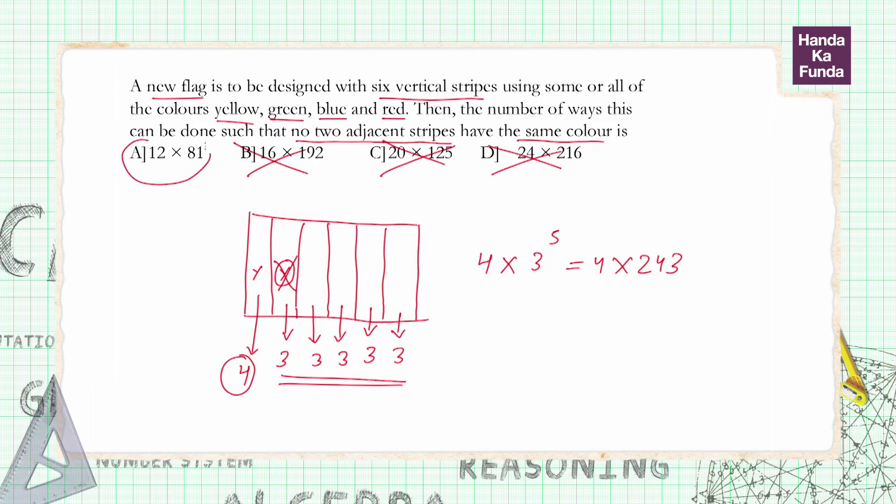Or, if instead of writing it as 4 × 3^5, you had written it as 4 × 3 × 3^4, you would have got this as 12 × 81, and that is option A. Thank you.